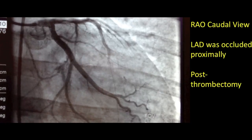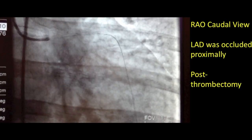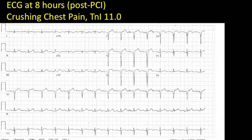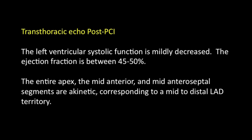The patient is sent back to the floor. Post-PCI EKG shows the Q-waves persist, as expected. Troponin is now 11. The diagnosis is a Q-wave MI — we never saw ST segment elevation. Transthoracic echo revealed an EF of 45 to 50%, with akinesis of the entire apex, mid-anterior, and mid-anteroseptal segments, which corresponds to a mid to distal LAD territory lesion.